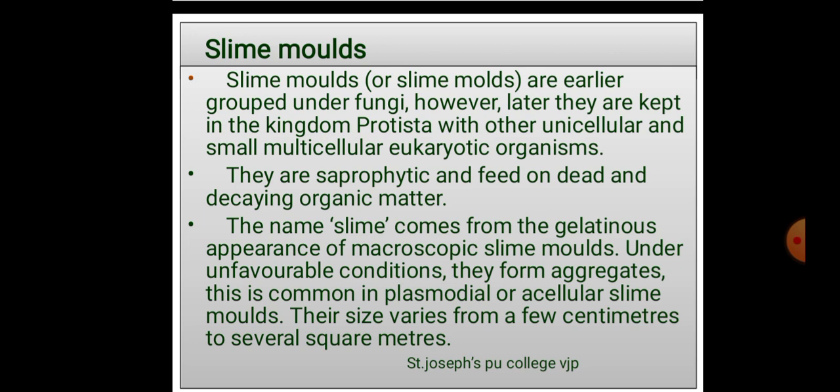They are saprophytic and feed on dead and decaying organic matter. The name 'slime' comes from the gelatinous appearance of macroscopic slime molds. Under unfavorable conditions they form aggregates. This is common in plasmodium or acellular slime molds. Their size varies from a few centimeters to several square meters.